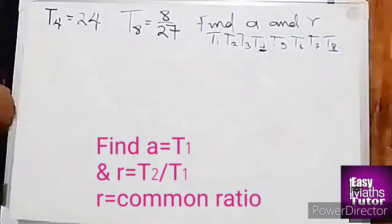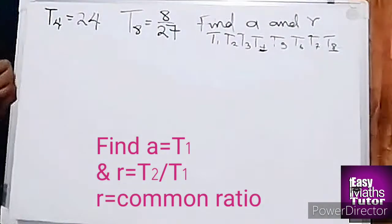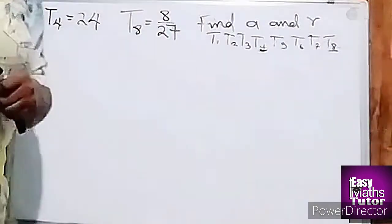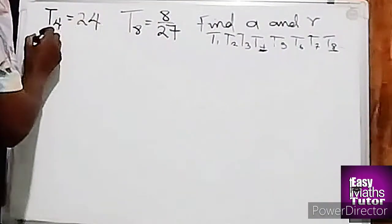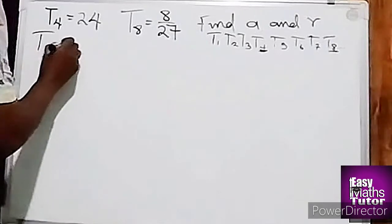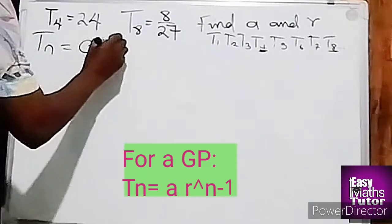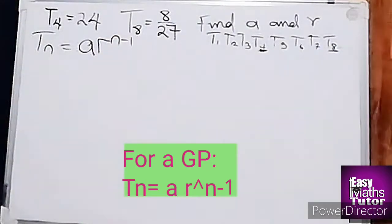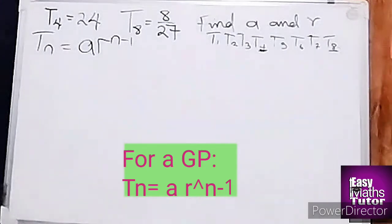So how we're going to go about that? First of all, we're going to use our geometric progression formula. We know the general formula is Tn equal to ar^(n-1). That's the general formula.